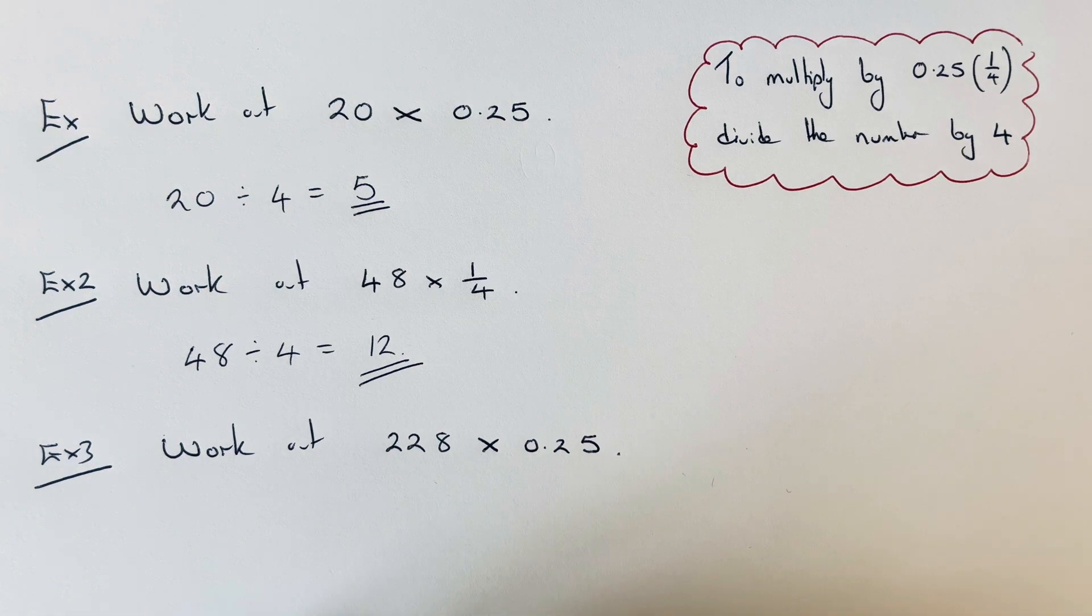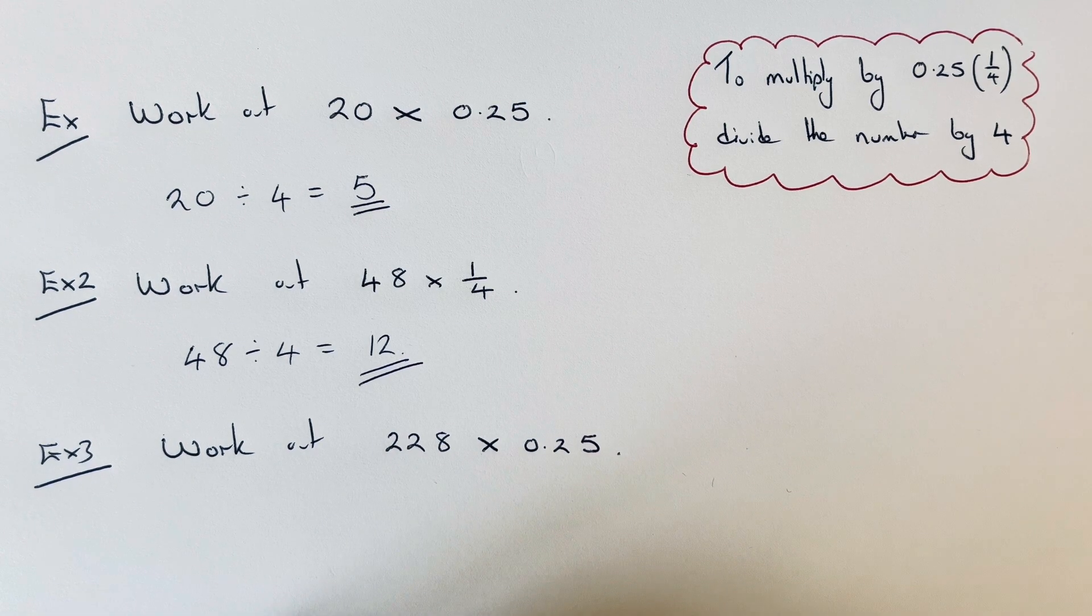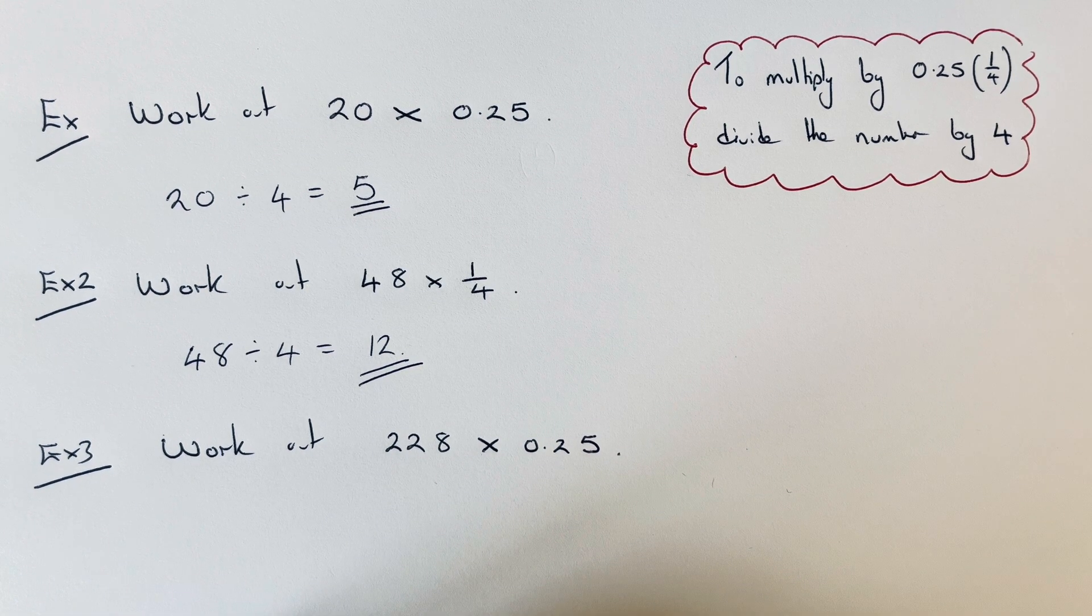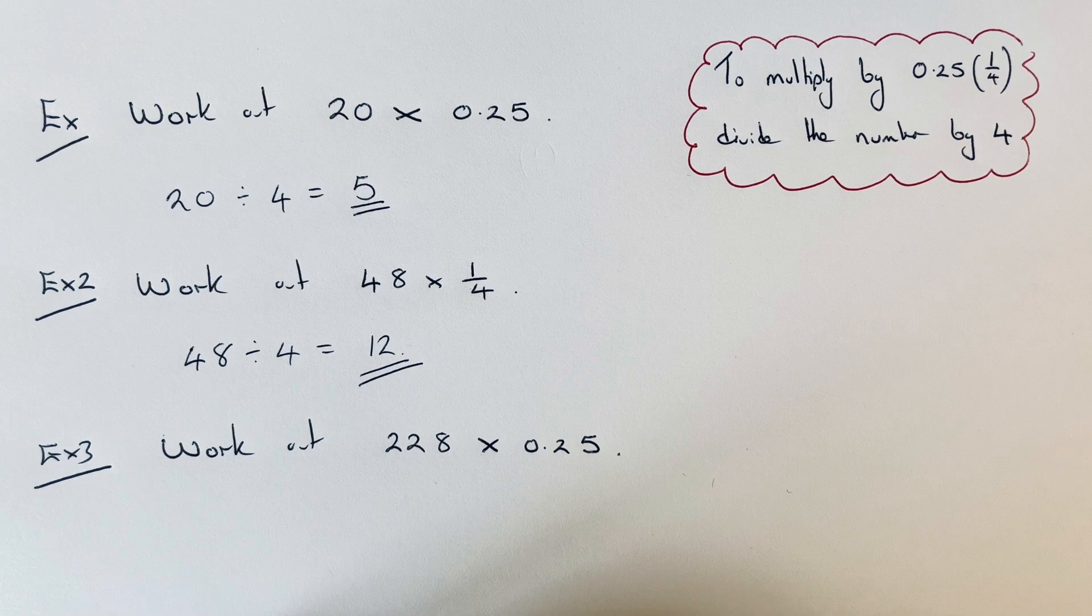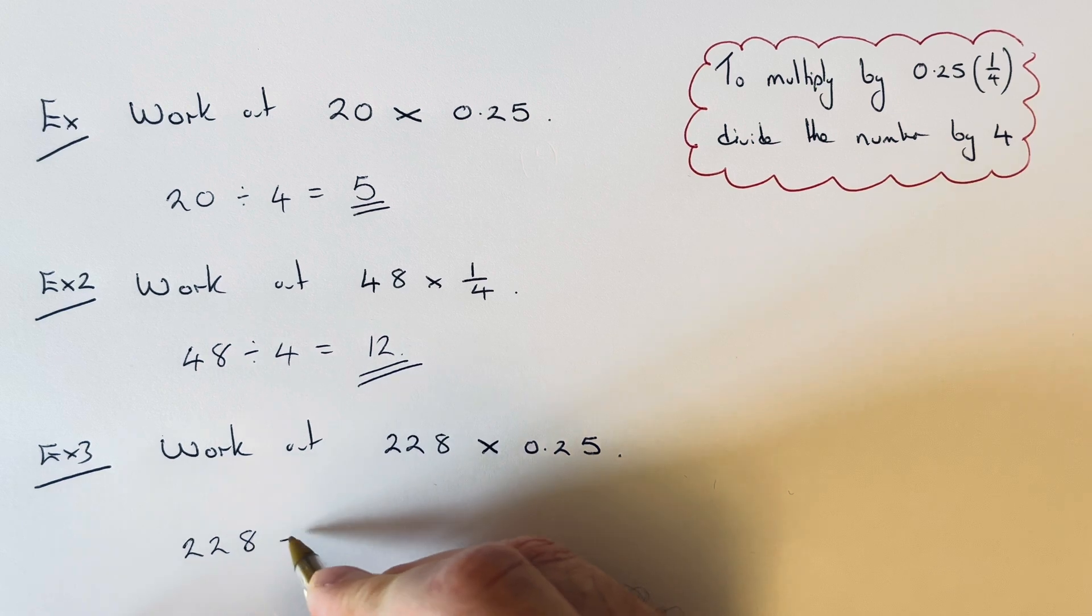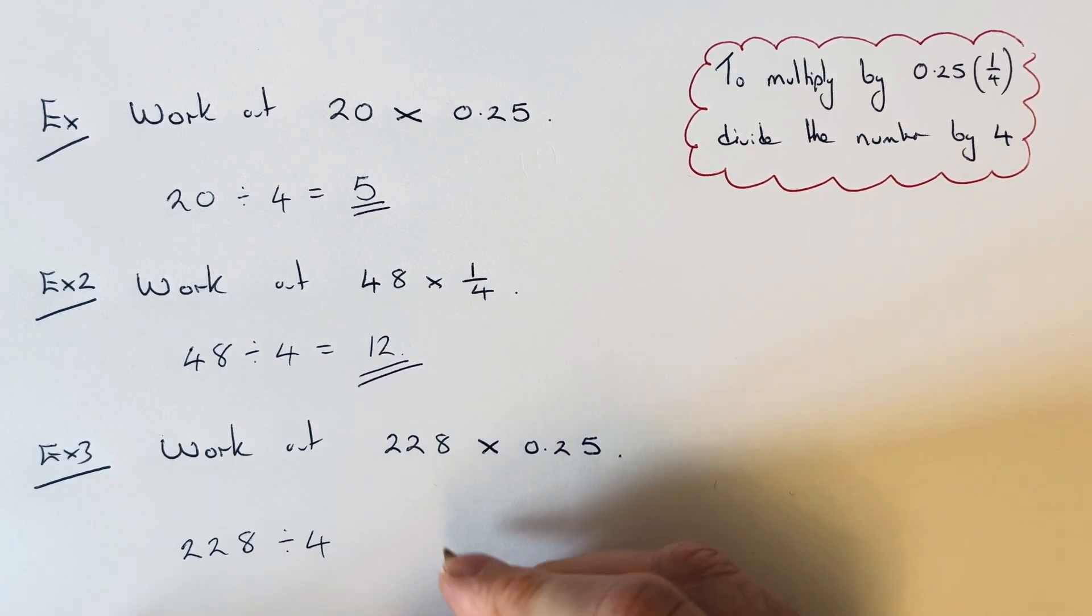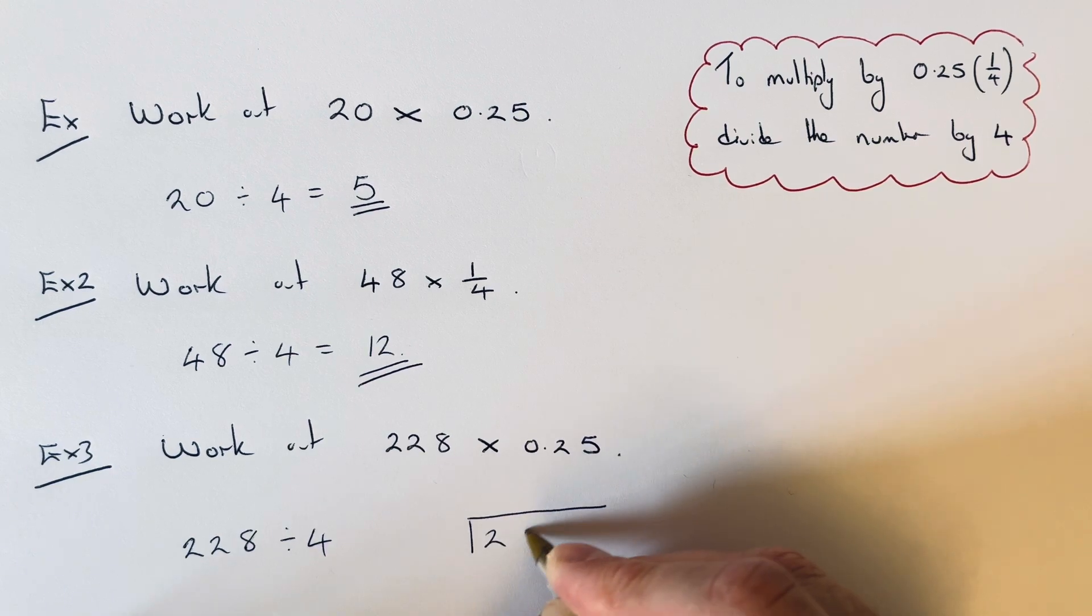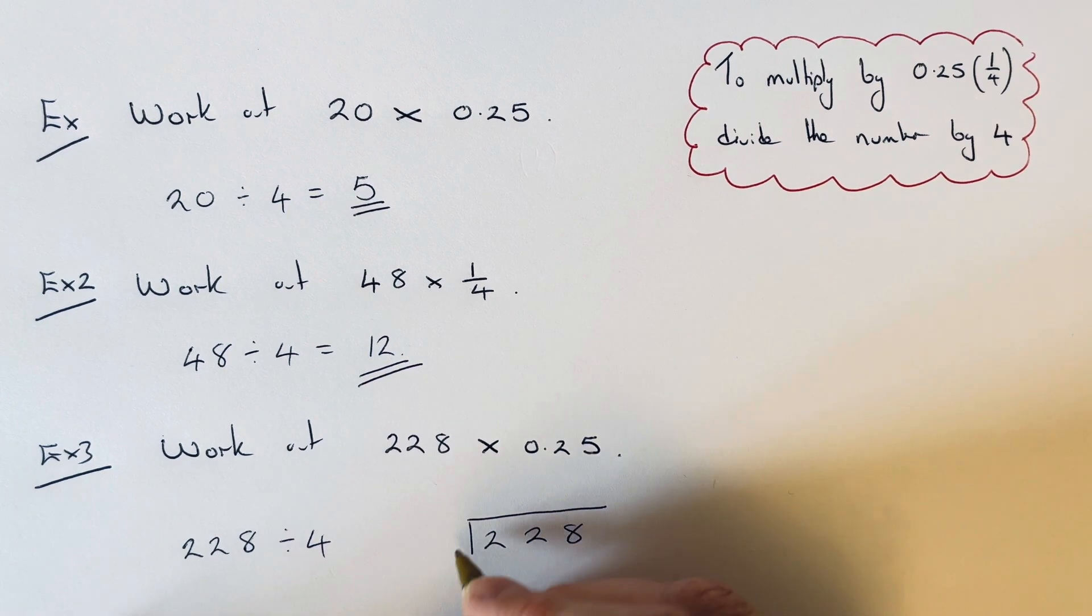So let's have a look at the final example. Work out 228 times 0.25. So again, we just need to divide our number by 4. So if you can't do this in your head, use a calculator or short division.